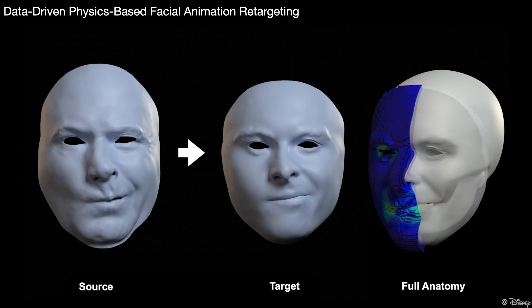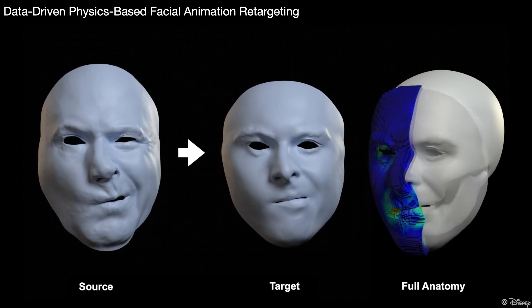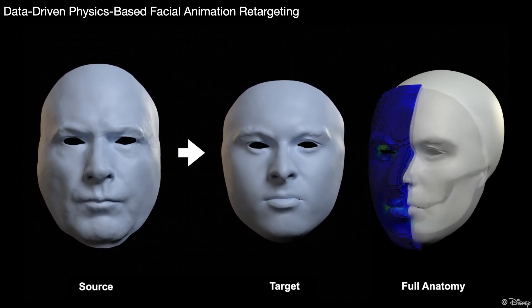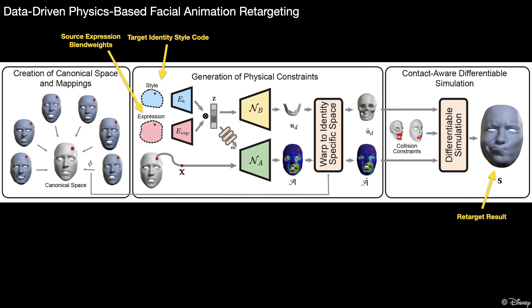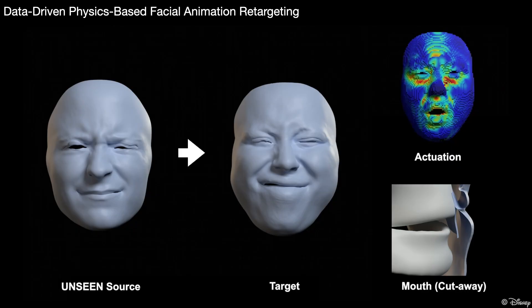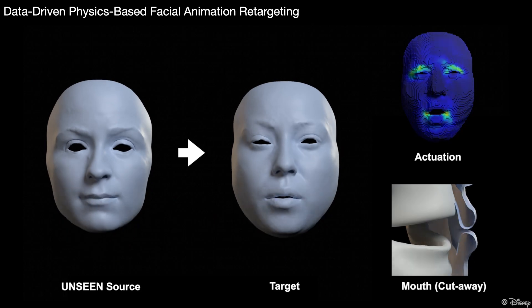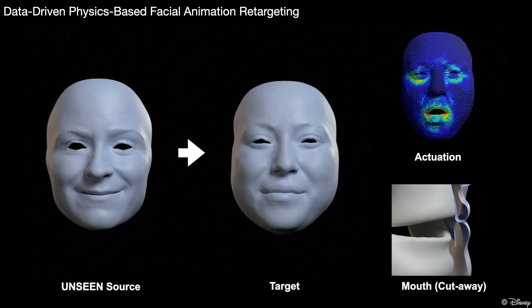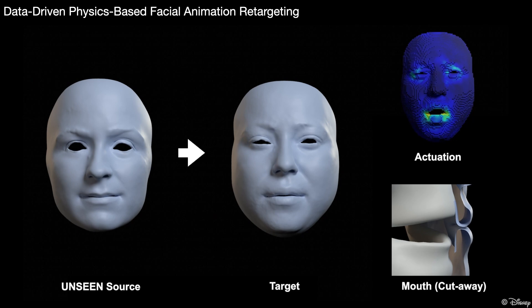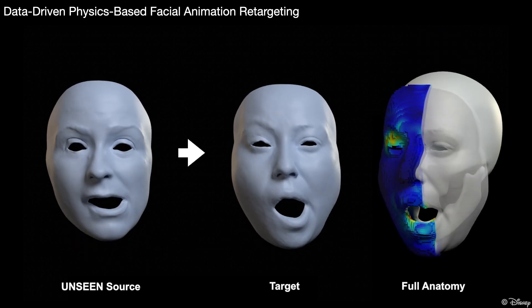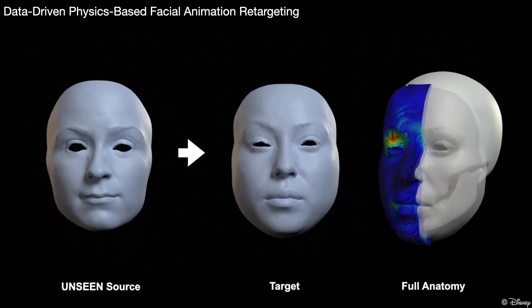We play the video again, showing the full anatomy on the right. Note that in our retargeting scenario, the source identity does not need to be seen during training — only the expression blend weights are required. However, if the source performance is available at training time, including it in the training data will allow the network to generalize to new identities and provide even better retargeting results.